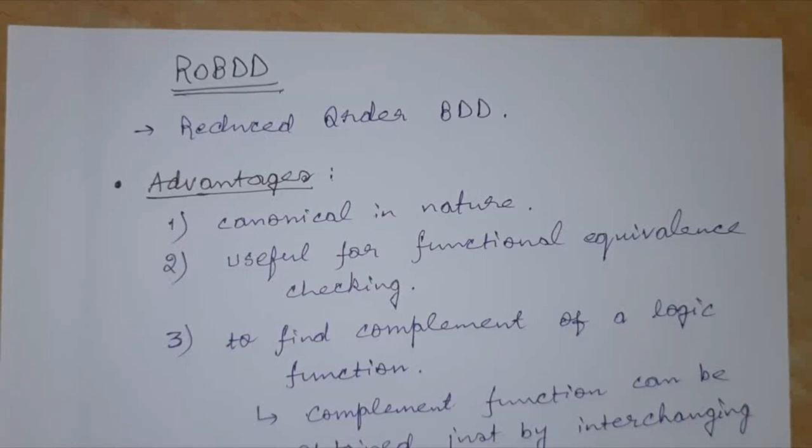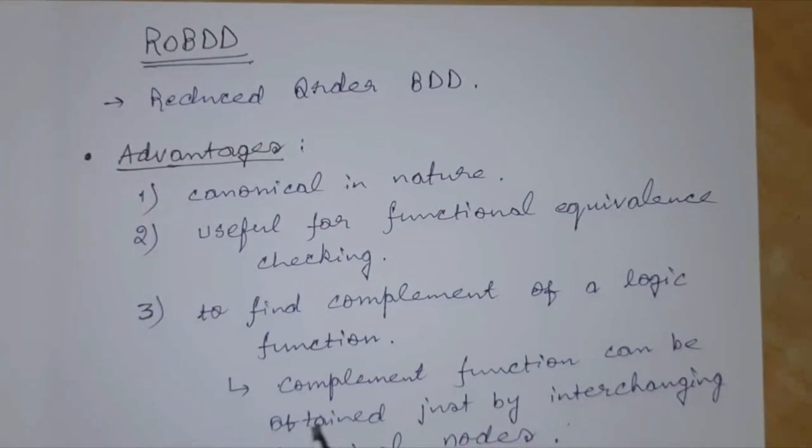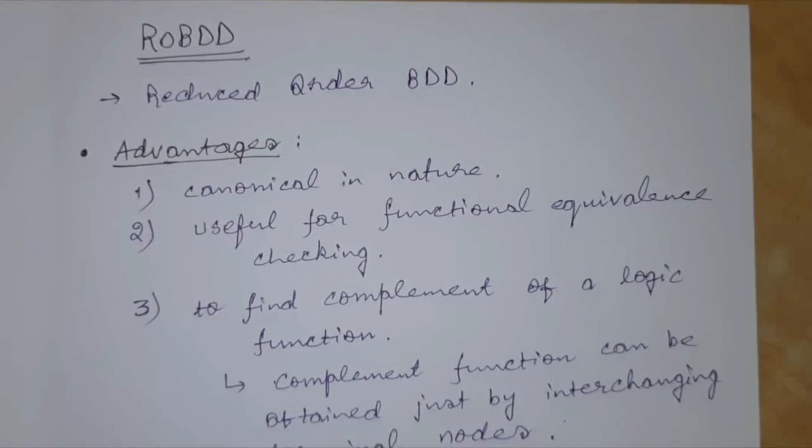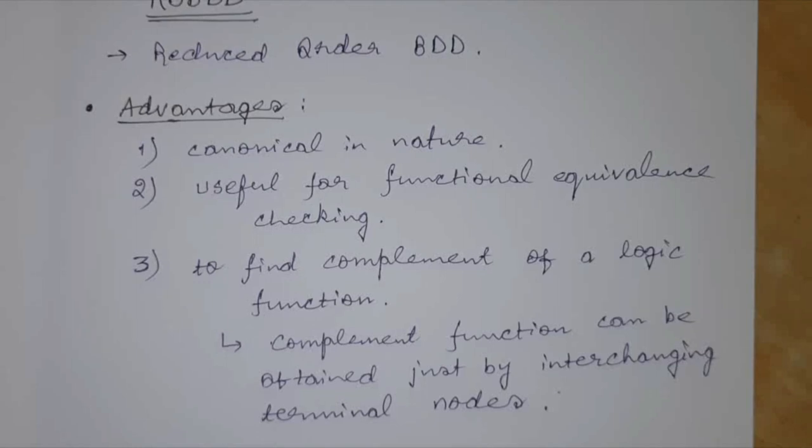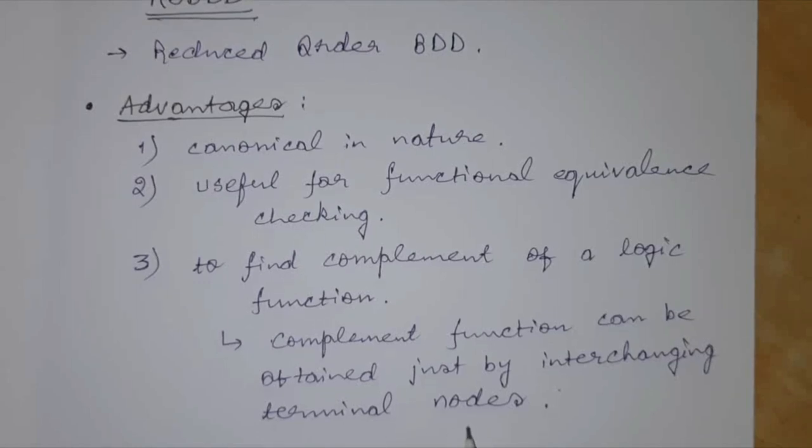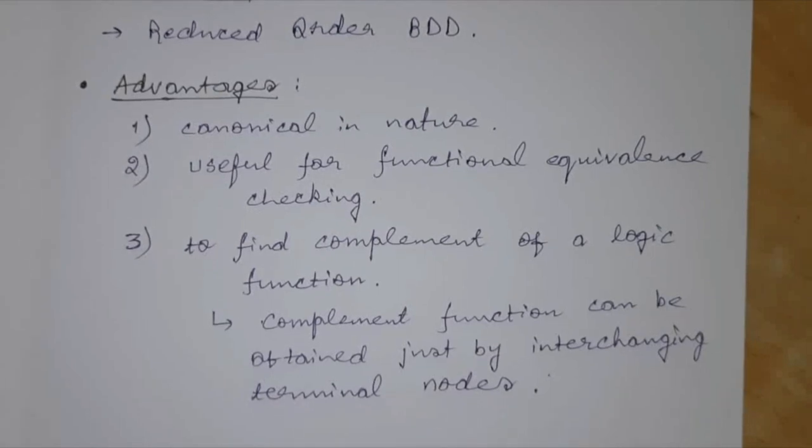Hence, it is useful in functional equivalence checking. This is the second one. And third is to find the complement of a logic function. See, if we have obtained an ROBDD of a logic function, then to obtain the complement of that logic function, that is F bar, just we have to interchange the terminal nodes. That is, 0 and 1 have to be interchanged, and we will obtain F bar or F complement.